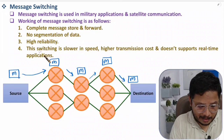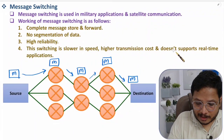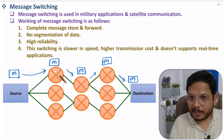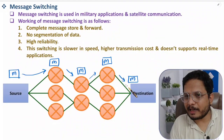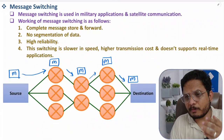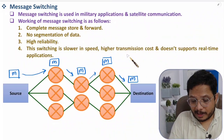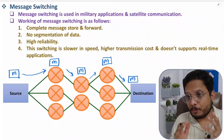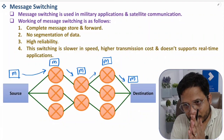However, message switching has some drawbacks: it is slower in speed, has higher transmission cost, and does not support real-time applications. Because the complete message is stored and then forwarded at each hop, delay is introduced, making real-time communication impossible. That covers all three categories of switching. If you have anything to share, please note it in the comment section. Thank you for watching.